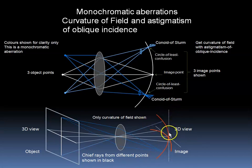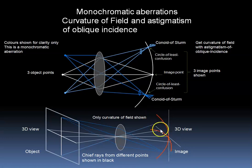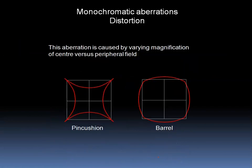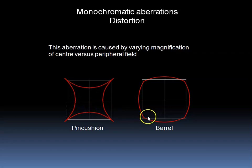This curved surface, or Petzval surface, is the shape of the retina. So it is apparent that the retina is well designed to get the clearest image of both peripheral and central points. Another aberration is distortion caused by varying magnification of central versus peripheral field. In pincushion distortion, the peripheral field is magnified to a greater extent than the central. In barrel distortion, the peripheral is magnified to a lesser extent than the central.